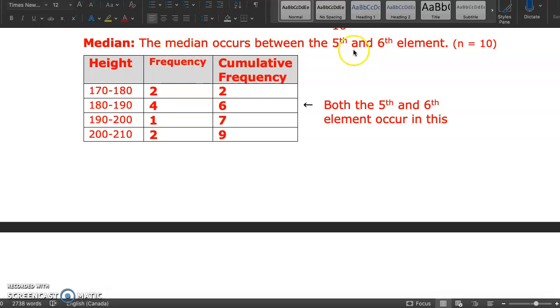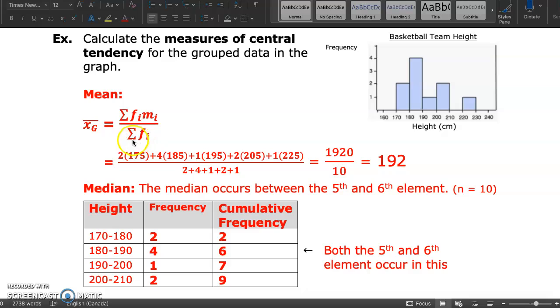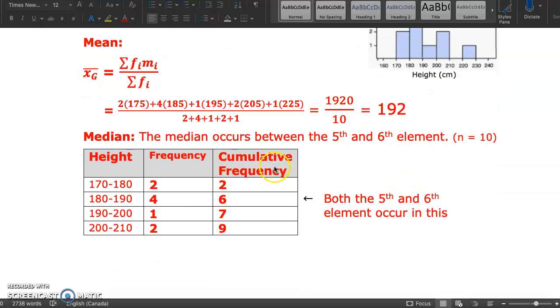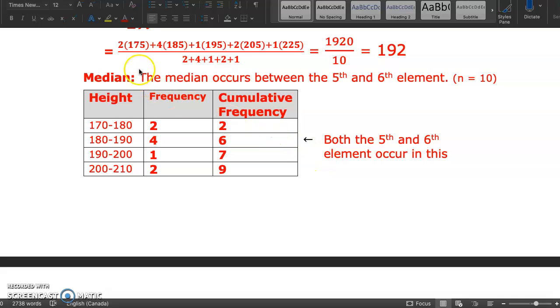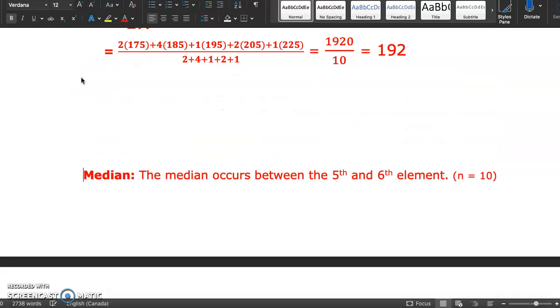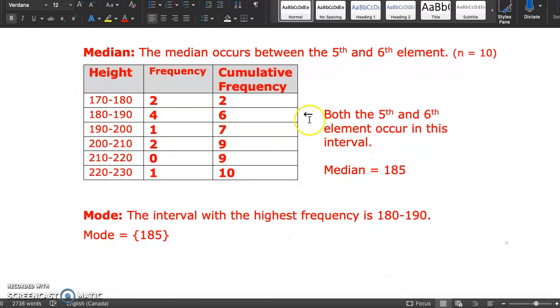If you look at the total number of elements in the set, the sum of the frequencies was 10. So if you had 5 on the left, 5 on the right, that's between the 5th and the 6th element. Look at the cumulative frequency. The 5th and the 6th element occurs here. So we would say that it's equal to 185.